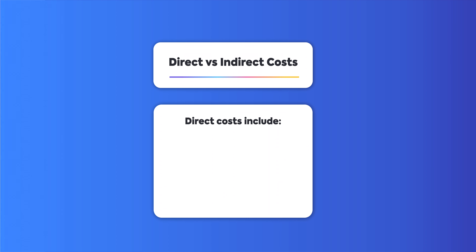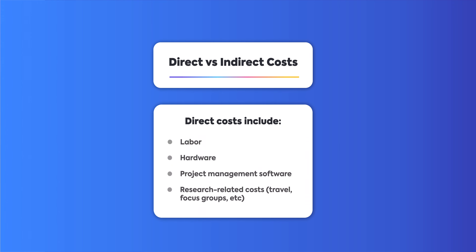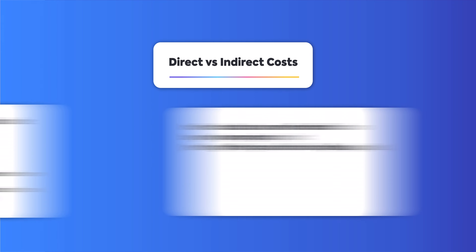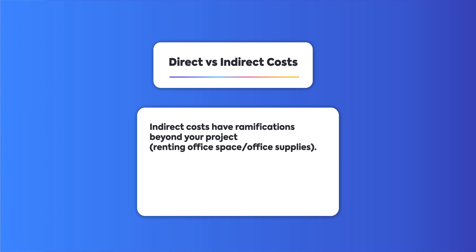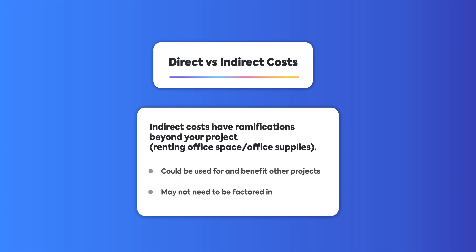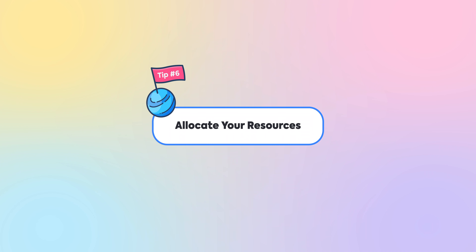Each budget will also have direct and indirect costs. Direct costs include labor, hardware, project management software, and any research-related costs like travel or focus groups. Indirect costs, on the other hand, have ramifications beyond your project, like renting office space or office supplies. These costs could be used for and benefit other projects too. Depending on the project, these costs may not need to be factored in.